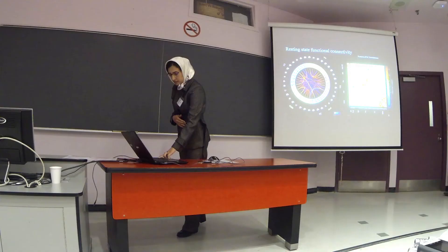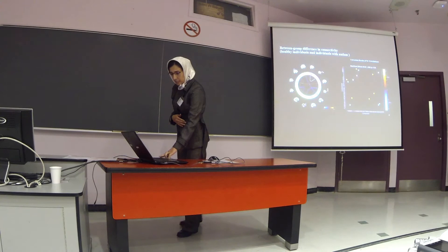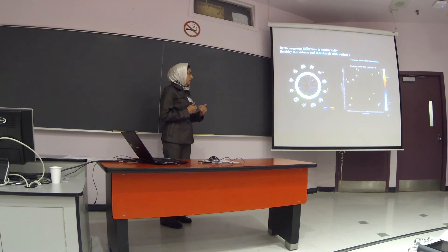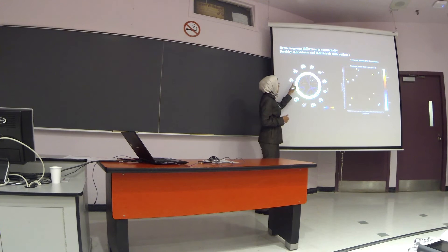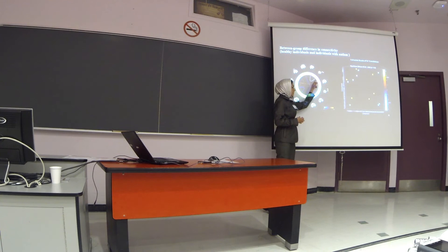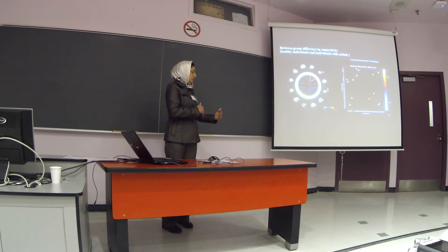Here is the between-group difference in connectivity between healthy individuals and individuals with autism. As you can see, some components have more correlation and connectivity, and some components have less connectivity, when comparing the healthy control group with the group affected by autism. These results are also confirmed by other studies.